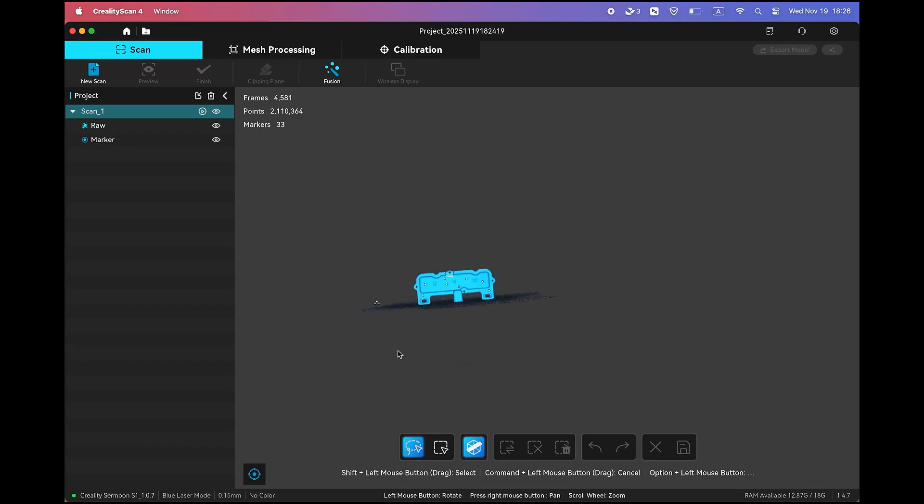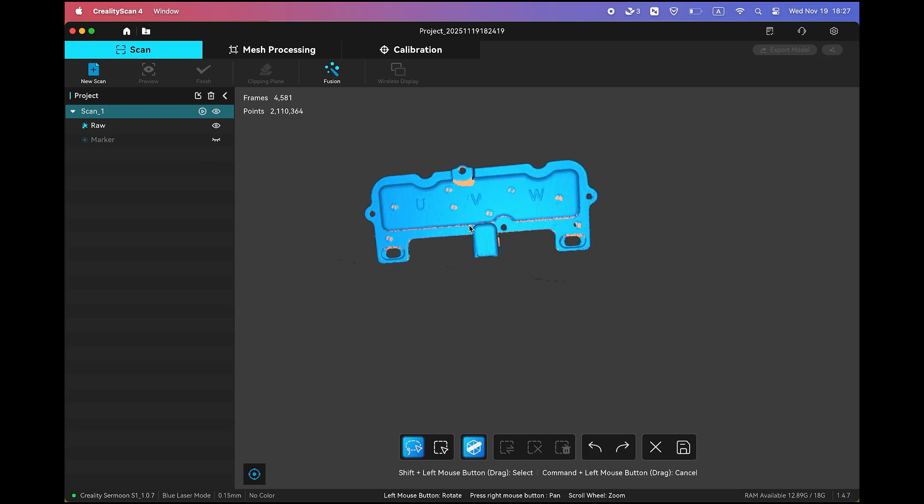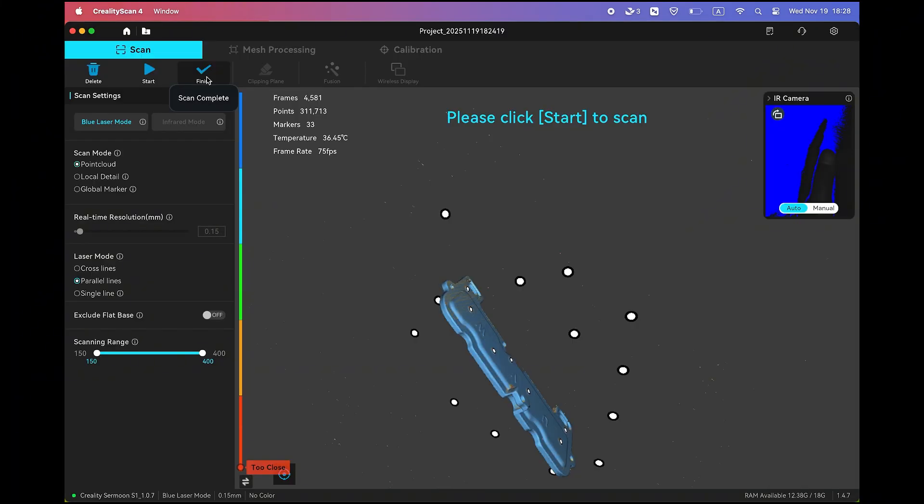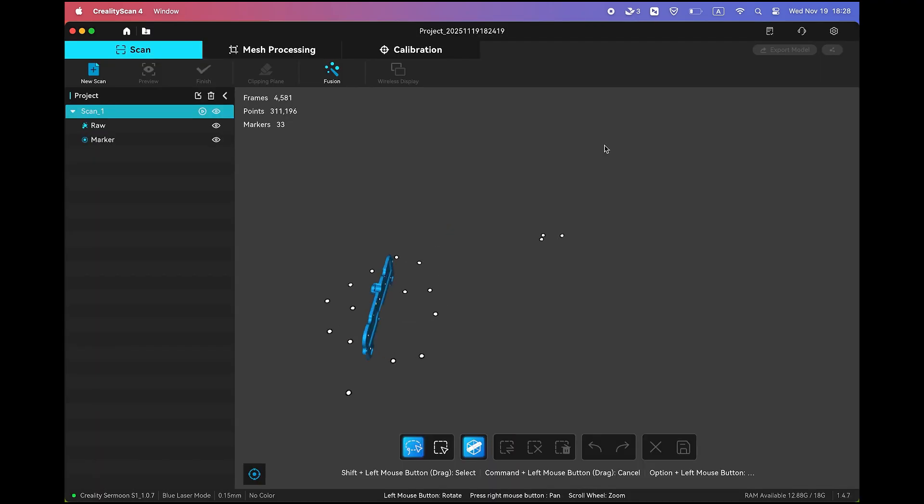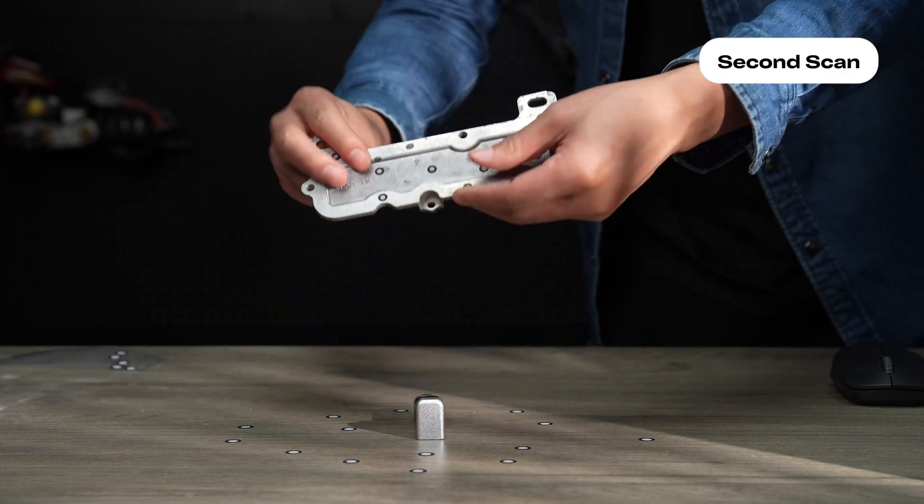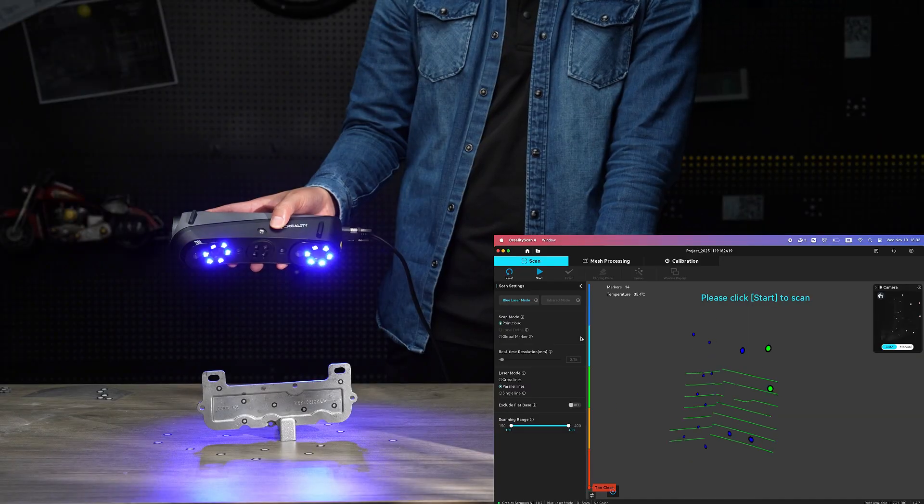Optimize the data, and then start a new scan. This is the most critical step. For the second scan, flip the part upside down and scan the other side.